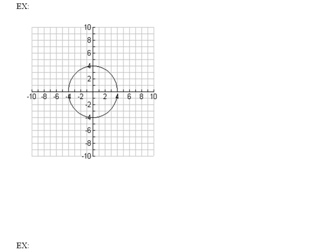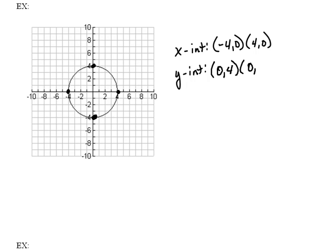Now let's look at this one. For our x-intercepts it looks like we are crossing the graph here at (-4,0) and at (4,0), and it looks like we're crossing the y-axis for our y-intercepts at the point (0,4) and (0,-4).